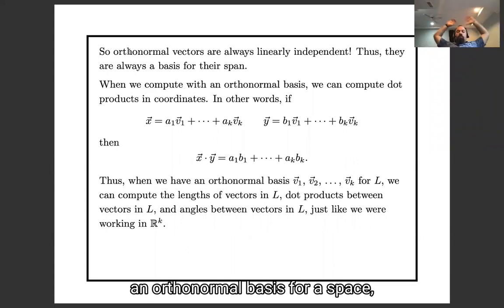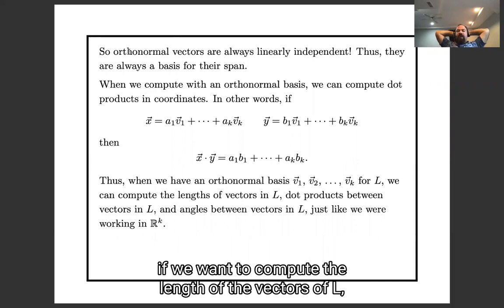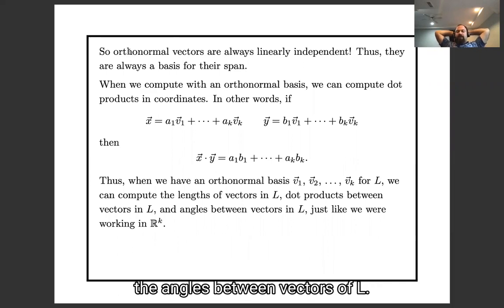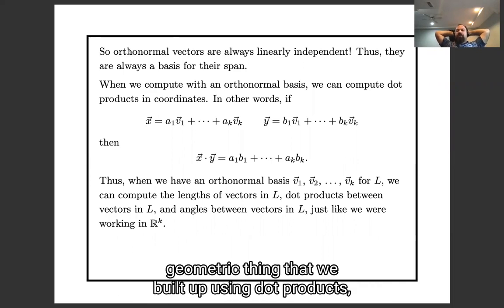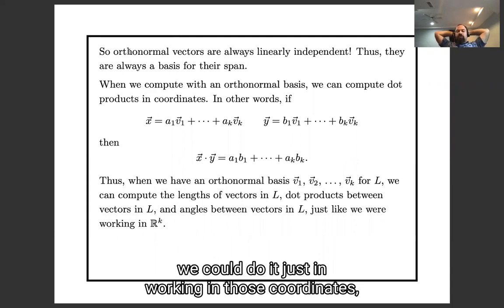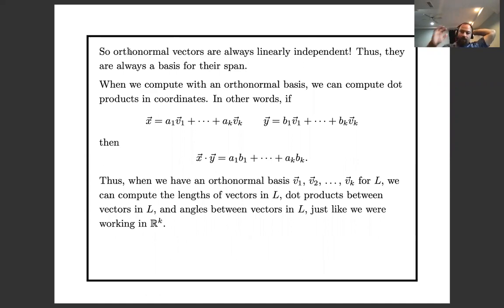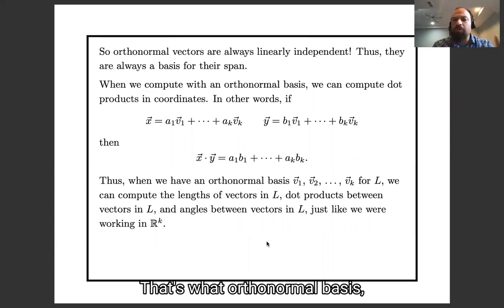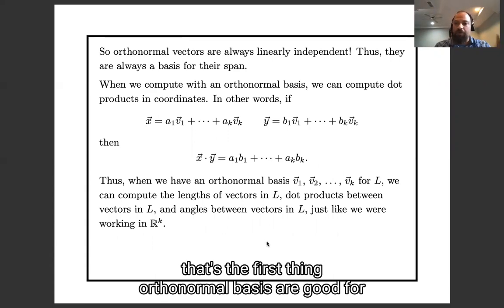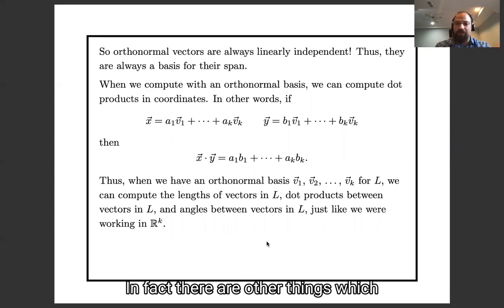And so we've seen that the dot product of these two vectors is the dot product of the a vector and the b vector. So that means whenever we have an orthonormal basis for our space, if we want to compute the lengths of vectors in L, the dot products between vectors in L, the angles between vectors in L, any sort of geometric thing that we build up using dot products, we could do it just working in those coordinates, in those k-dimensional coordinates.